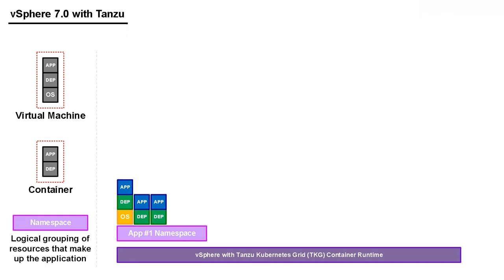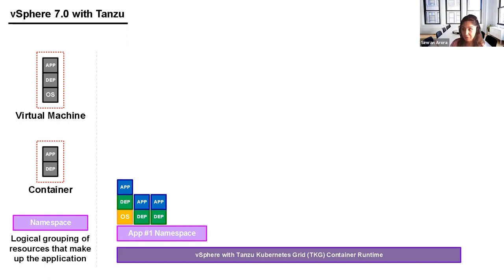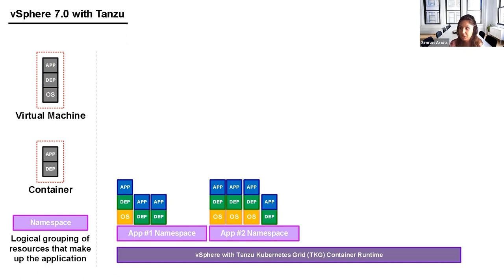We have vSphere Tanzu Kubernetes Grid, which is our container runtime. There's no hardware shown because it doesn't matter whether it's physical servers in your own data center or in the cloud — we just treat it as a resource to be consumed. On top of vSphere Tanzu Kubernetes Grid we have namespaces — for example, 'Application One' — and in the real world applications are often a combination of virtual machines and containers.